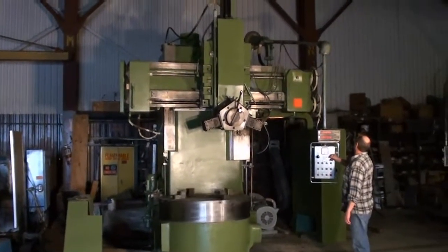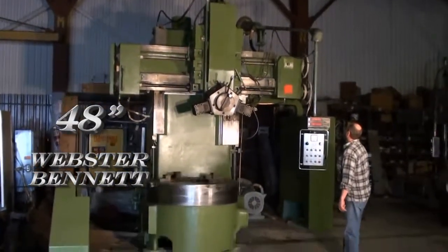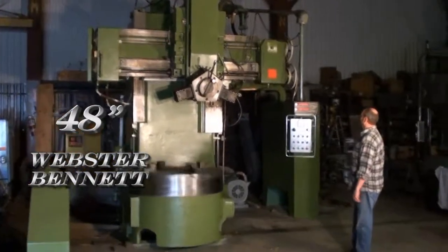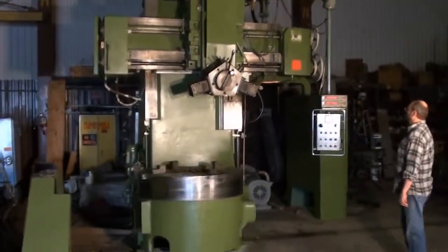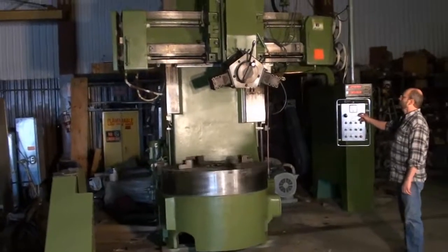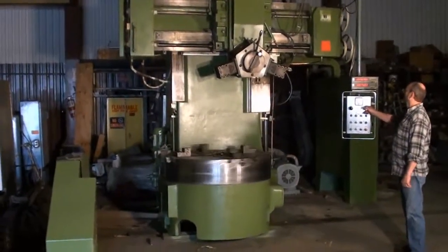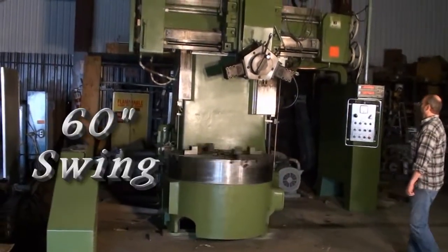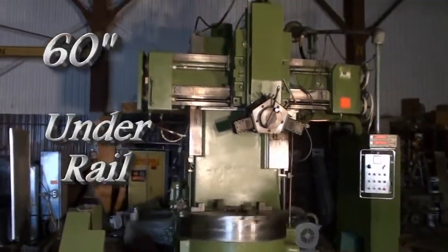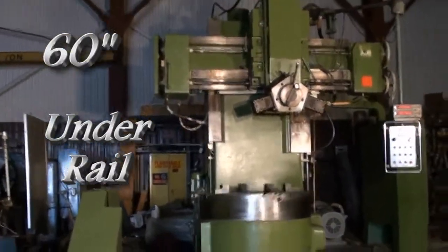This afternoon we're going to get a look at a 48 inch Webster Bennett. This is a real special machine for all its features. This machine has a 60 inch swing and 60 inches under the rail.